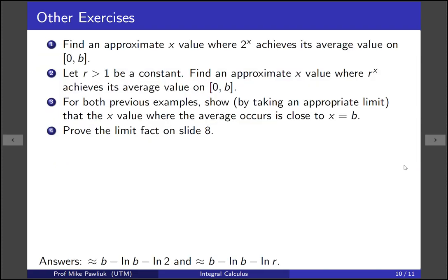All right, here are some other exercises. Find an approximate x value where 2^x achieves its average value on [0,b]. Let r > 1 be a constant, find an approximate x value where r^x achieves its average value on 0 to b. So these are generalizations of what we did. For both of the previous examples, show by taking an approximate limit that the x value where the average occurs is close to x equals b. Also prove the limit fact on slide 8. There are answers for the first two questions here if you want.